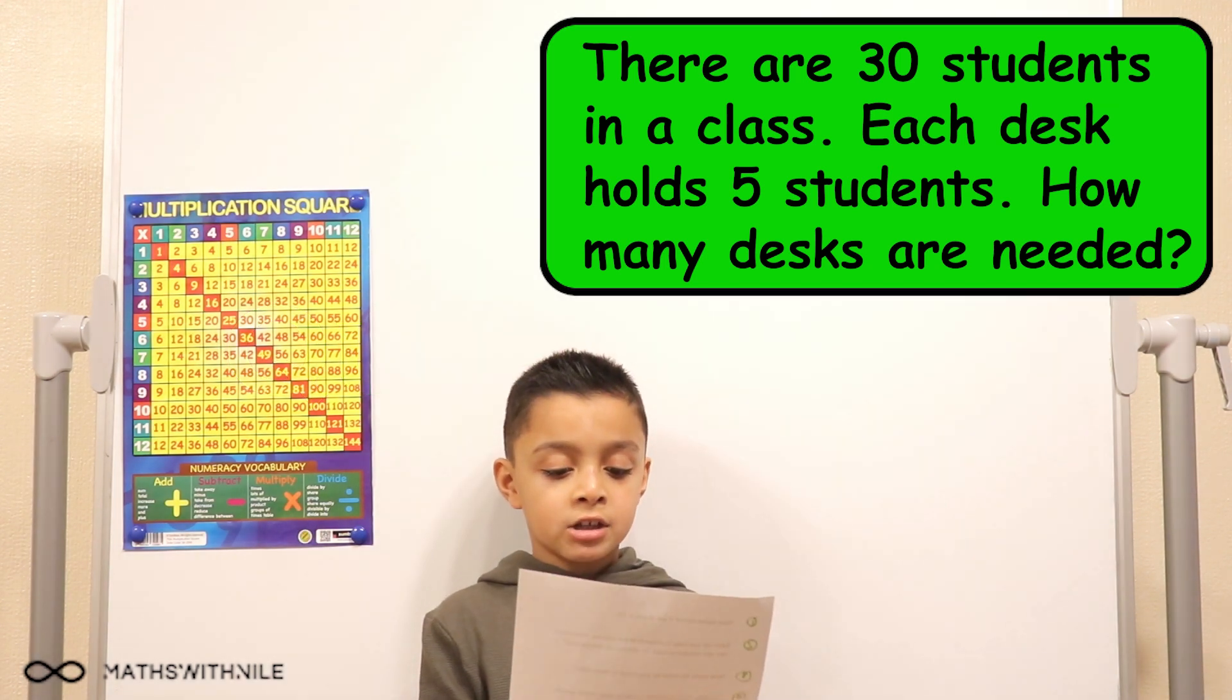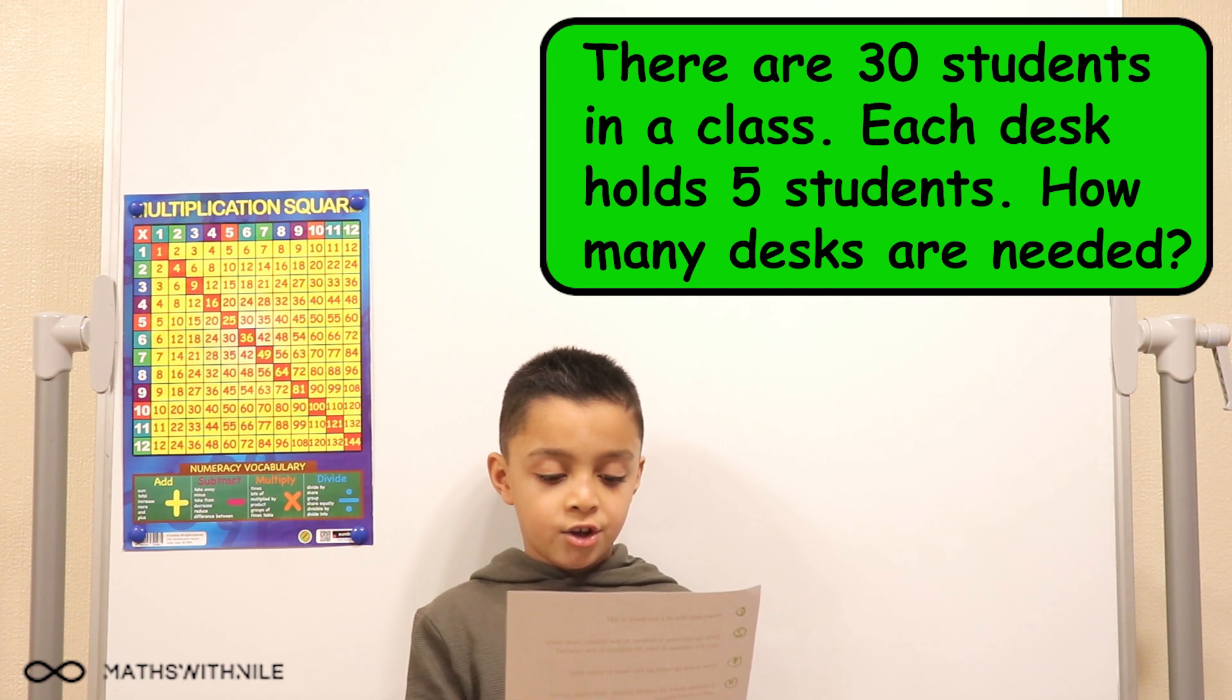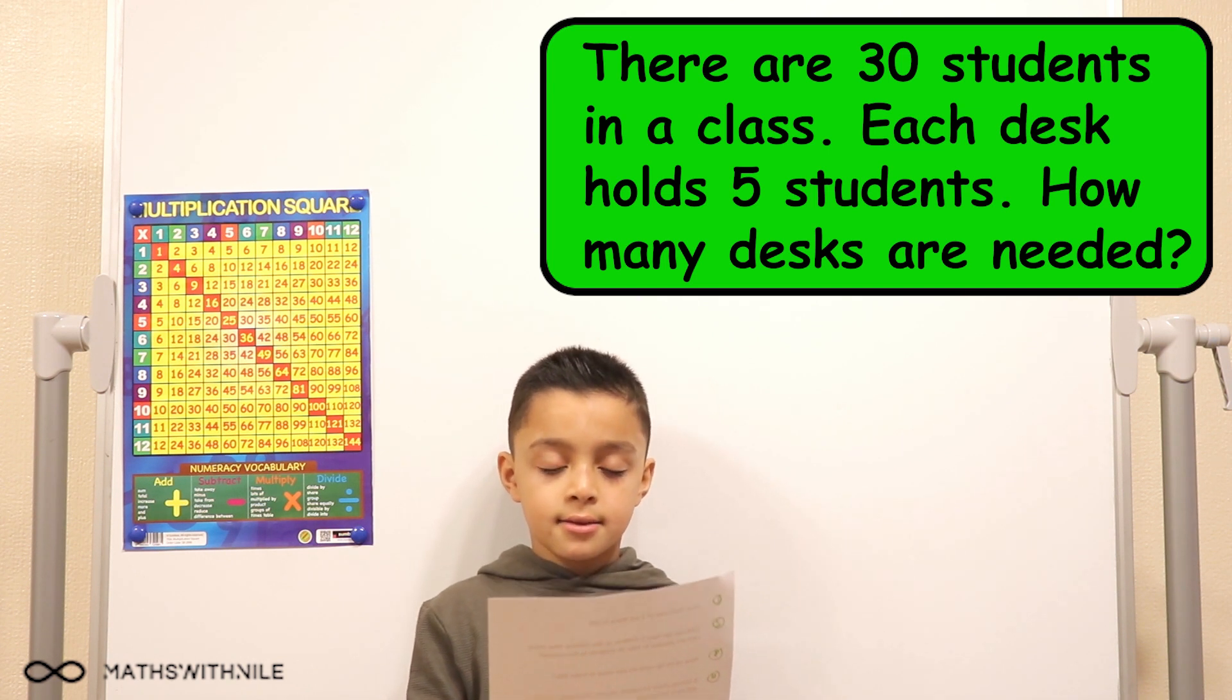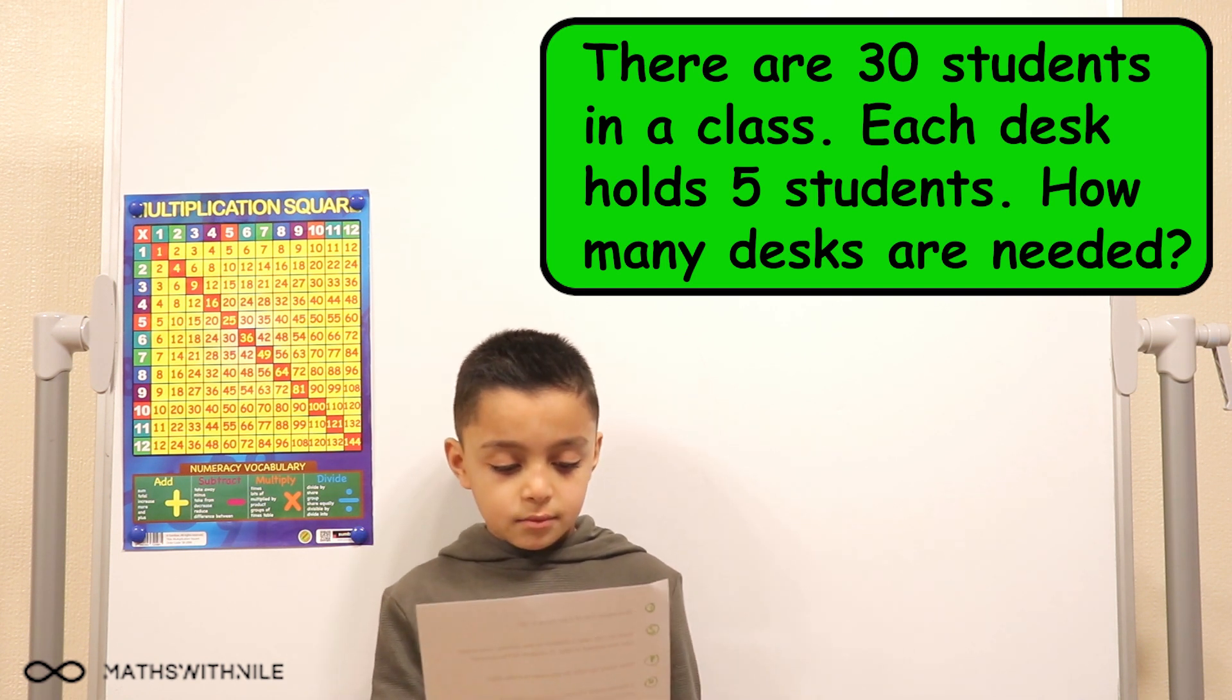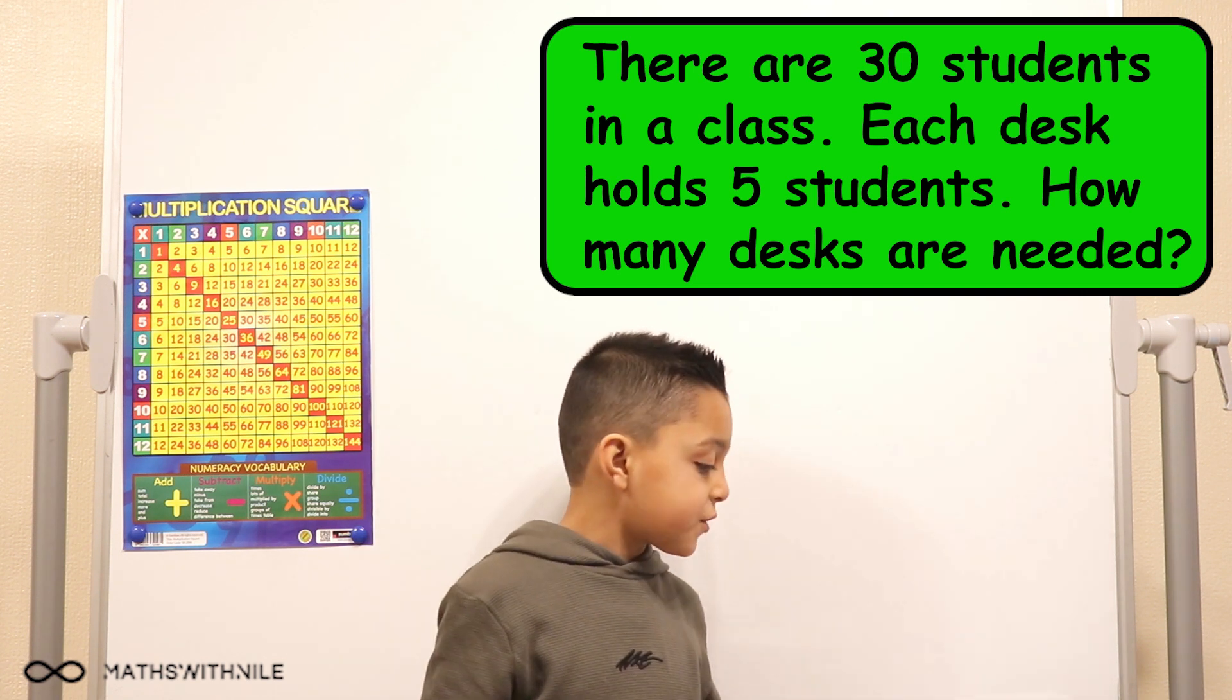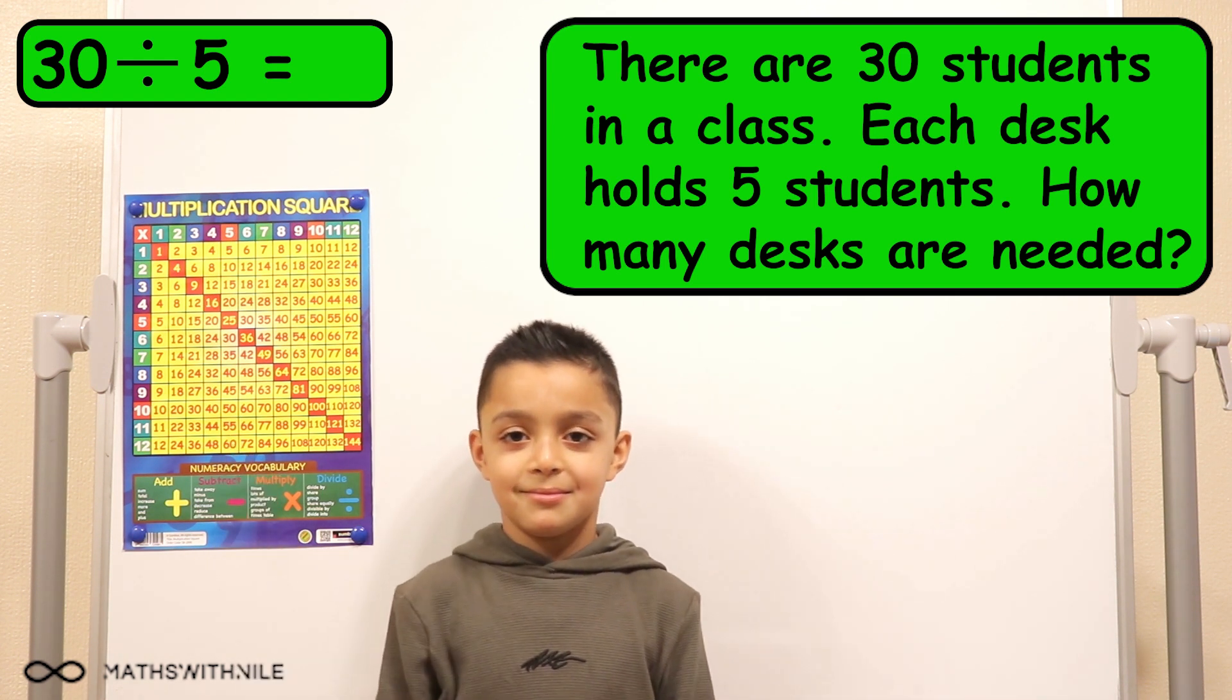There are 30 students in a class. Each desk can hold 5 students. How many desks are needed? So what's the number sentence? 30 divided by 5 equals blah, blah, blah. Blah, blah, blah? Yeah.